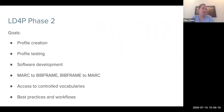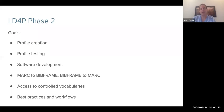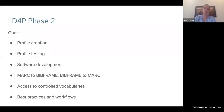Of the main goals of the second phase, the only one that doesn't seem to have been fully achieved was the MARC to BibFrame, BibFrame to MARC conversion. But there is a third phase of the grant which is already underway. Hopefully that will be addressed in addition to further developing the software and increasing the number of institutions that can participate in Sinopia. This presentation is more focused on profile creation and testing and the best practices and workflows.